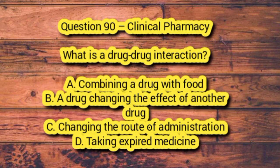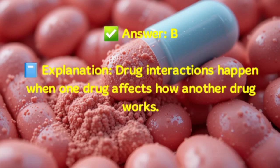Question 90 – Clinical Pharmacy. What is a drug-drug interaction? A. Combining a drug with food. B. A drug changing the effect of another drug. C. Changing the route of administration. D. Taking expired medicine. Answer: B. Explanation: Drug interactions happen when one drug affects how another drug works.